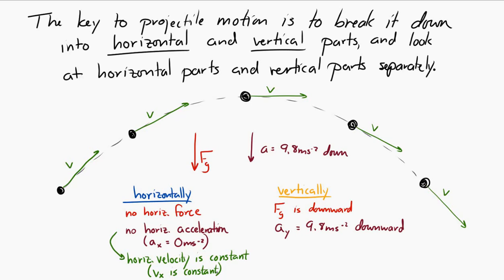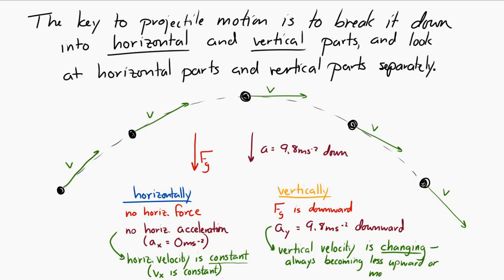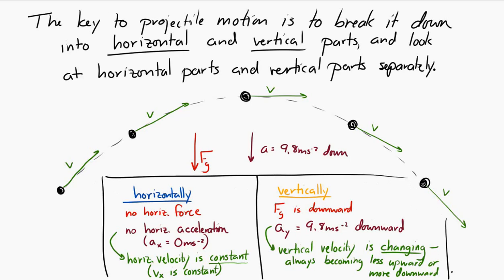Vertically, the velocity must be changing because there is vertical acceleration of 9.8 meters per second squared downward. Because the acceleration is downward, the vertical velocity is always becoming either less upward or more downward — it's always accelerating downward. Those are the basics of how we deal with projectile motion: split into horizontal and vertical, and use what we know about each.